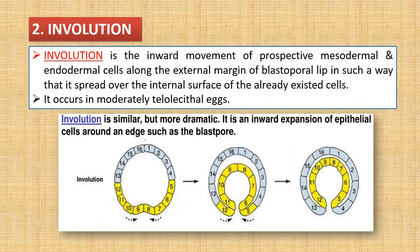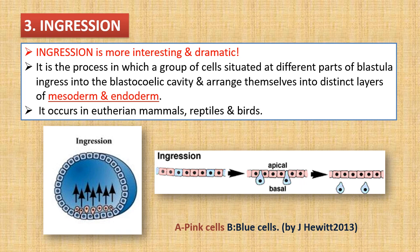Involution is the inward movement of prospective mesoderm and endodermal cells along the external margin of the blastopore lip, in such a way that they spread over the internal surface of the already-existing cells. It occurs in moderately telolecithal eggs. As shown in the figure, yellow-colored cells move to the interior and lie just below the existing layer of cells. This is involution.